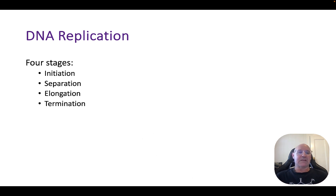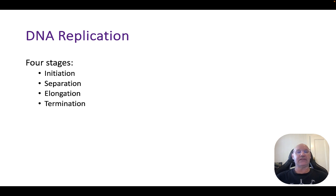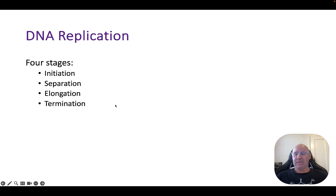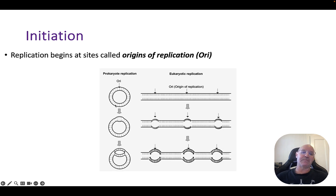There are four stages in DNA replication: Initiation, Separation, Elongation, and Termination — or ISET, which I like to use to remember. Let's talk about each of those steps.